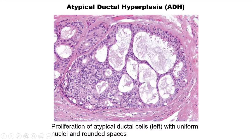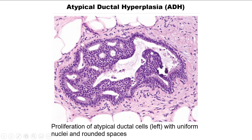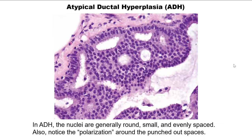Another example demonstrates partial duct involvement on the right, with atypical cells filling the lumen on the left — including rounded cribriform spaces, uniformity of nuclear morphology and distribution. Another example more clearly shows the uninvolved area versus the filled-in area with round, rigid-appearing spaces. It's that uniformity of cells filling the lumen that defines atypical ductal hyperplasia. The nuclei are generally round, somewhat small and uniform, evenly distributed, and polarized around these punched-out spaces — well organized rather than overlapped and haphazard.